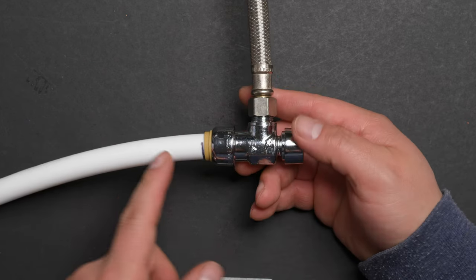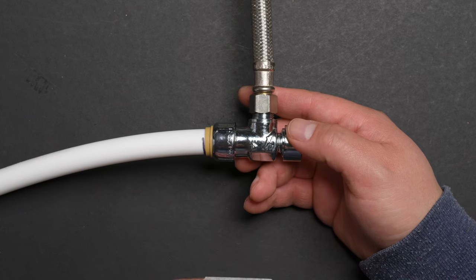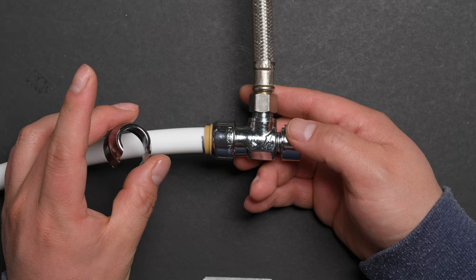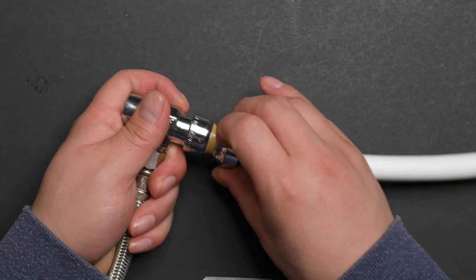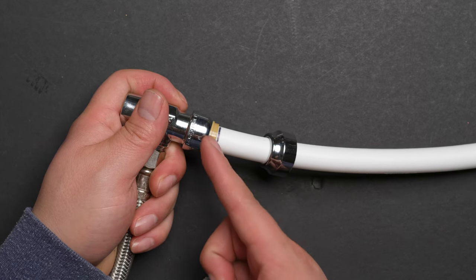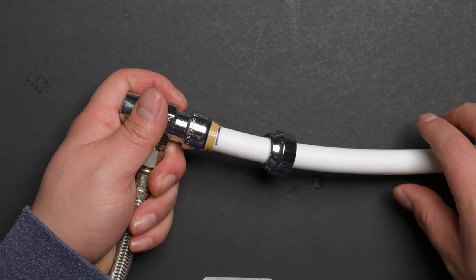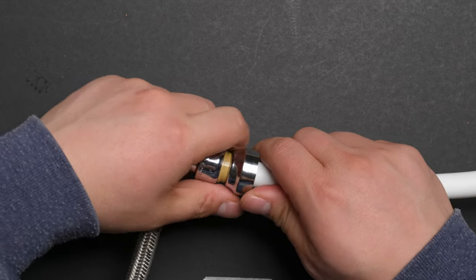So if you really want to disconnect or you want to change the whole thing, here is the tool. The way to disconnect it is to push this part against the plastic. It will open up the metal teeth, and at the same time, take the PEX tube out. Let's do this.